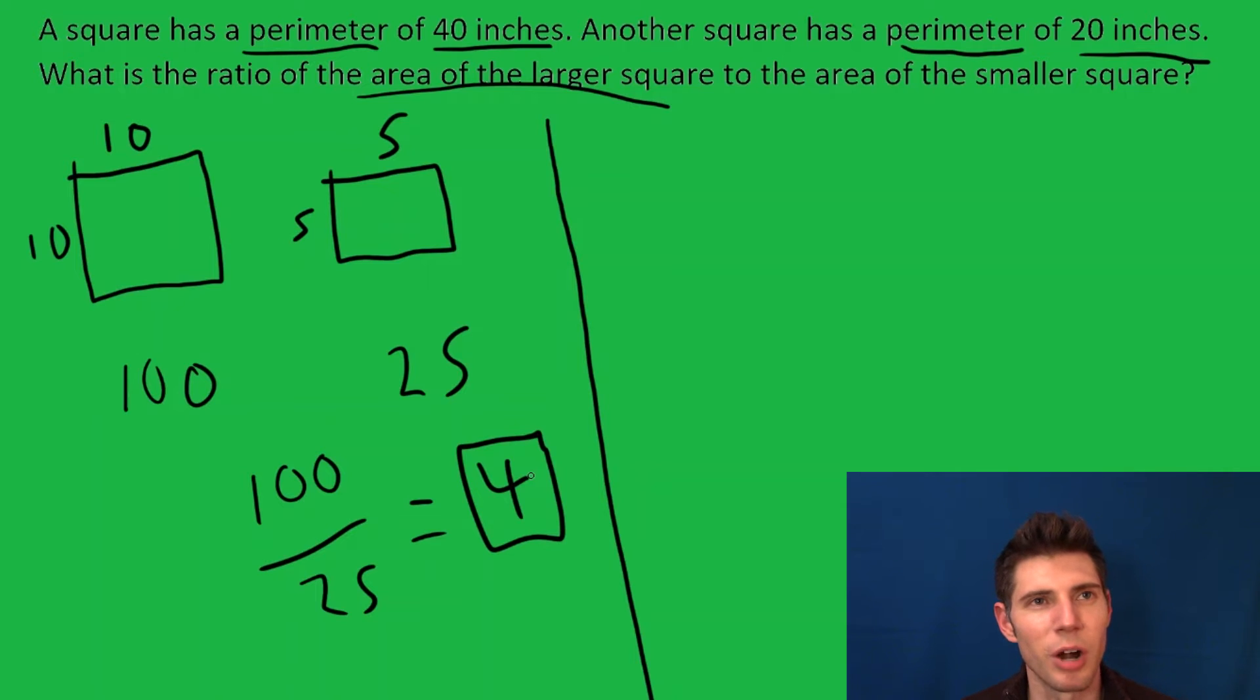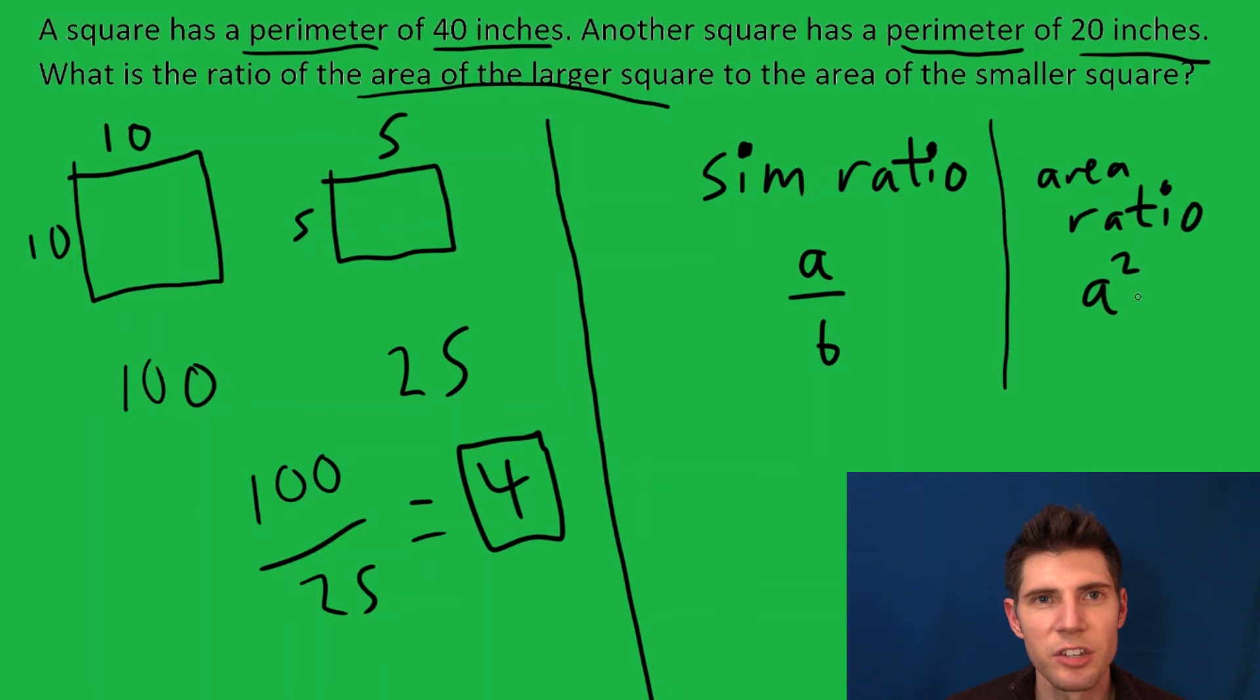If you know that the similarity ratio is a over b, then the area ratio is a squared over b squared. The similarity ratio is going to be the same thing as the ratio of the perimeters.